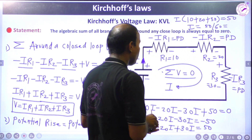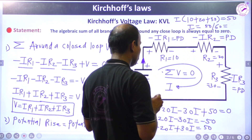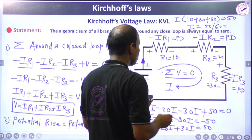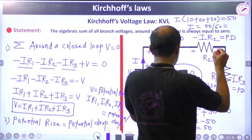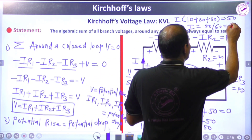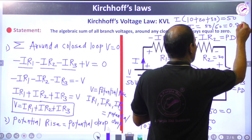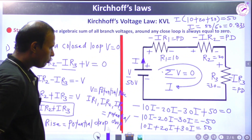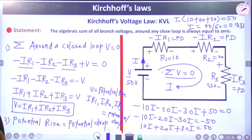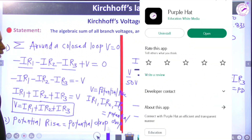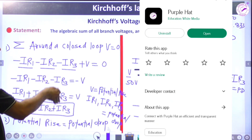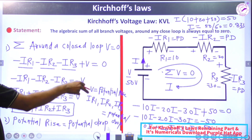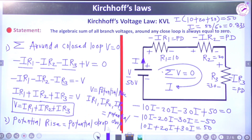Therefore, current I = 50/60 = 0.833 amperes. In this way any network can be solved very easily. For multiple closed loops, the number of equations equals the number of loops — a single loop gives one equation, and multiple loops give multiple equations.